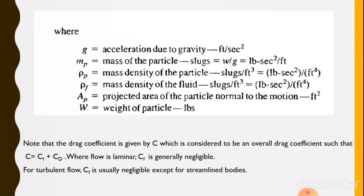Where g is acceleration due to gravity in ft per second squared; Mp is the mass of the particle in slugs; ρp is the mass density of the particle in slugs per cubic foot; ρf is the mass density of the fluid in slugs per cubic foot; Ap is the projected area of the particle normal to motion in square feet; and W is the weight of the particle in pounds (lbs).